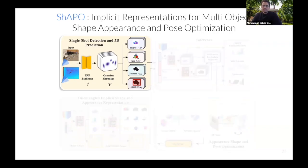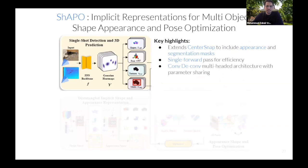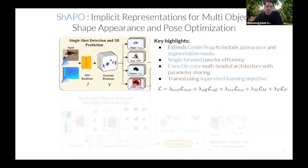Going deep into the specifics of each module: we extend CenterSnap to include appearance and segmentation masks. We regress all quantities using a single forward pass for efficiency. The architecture uses a convolution-deconvolution multi-head architecture with four heads — one for each specific task of shape, pose, texture, and mask prediction. We optimize these using a collection of supervised losses from a large collection of synthetic data with very minimal real-world fine-tuning, and we are working to forego that real-world label requirement entirely.